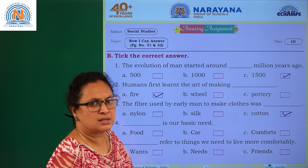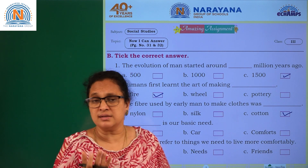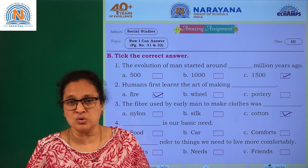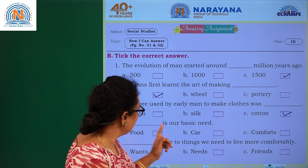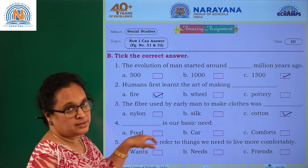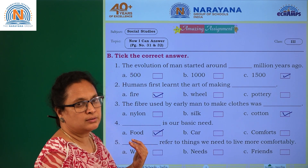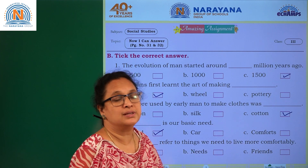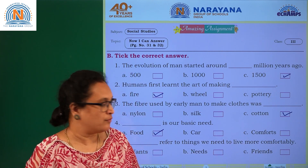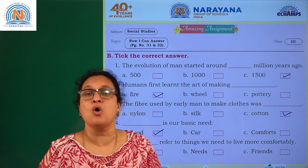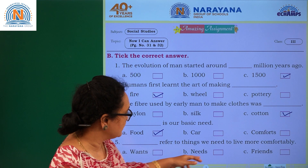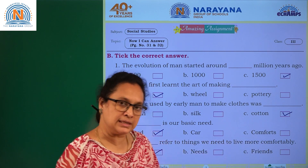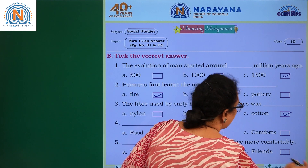Dash is our basic need. There is a big difference between wants and needs. Food, clothes, and shelter are basic needs. The options are food, car, and comfort — the answer is food. For the next one: dash refers to things we need to live more comfortably — wherever 'comfortably' is mentioned, the answer is wants.